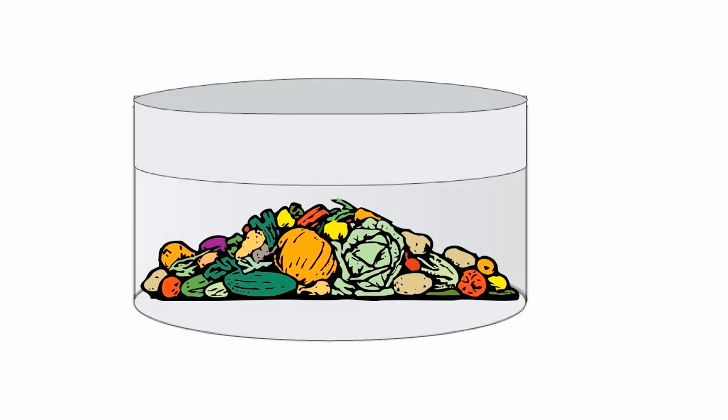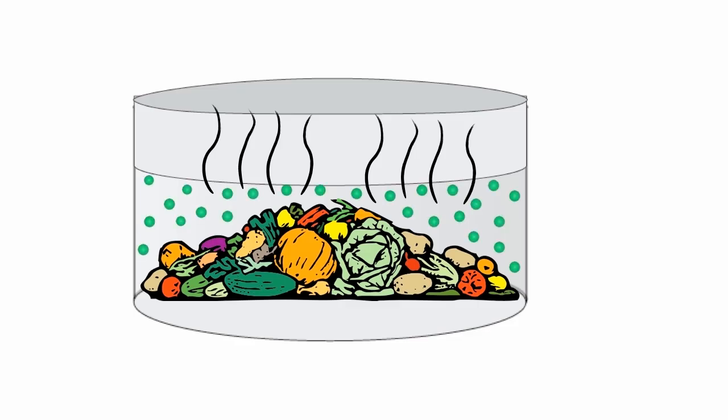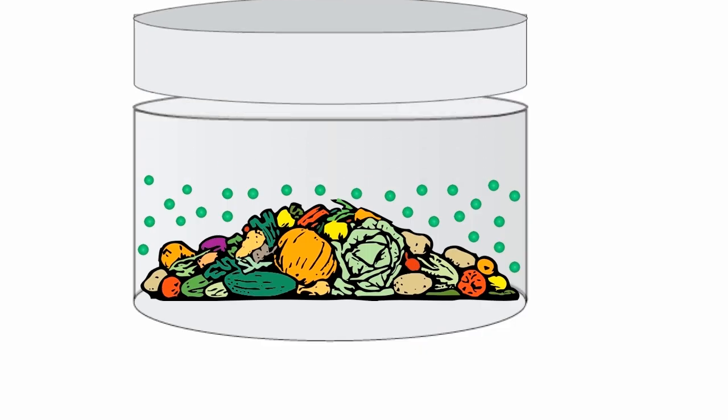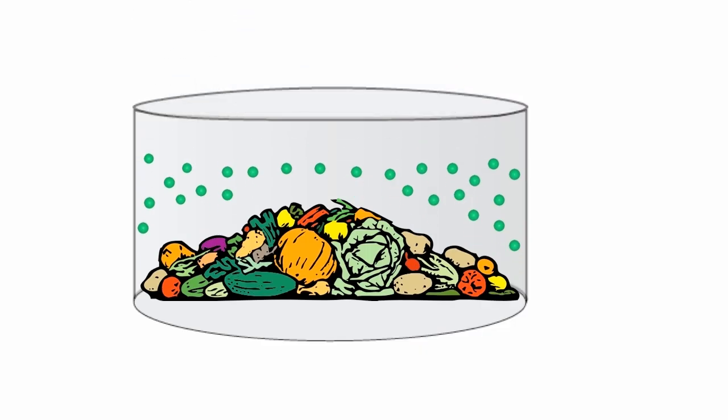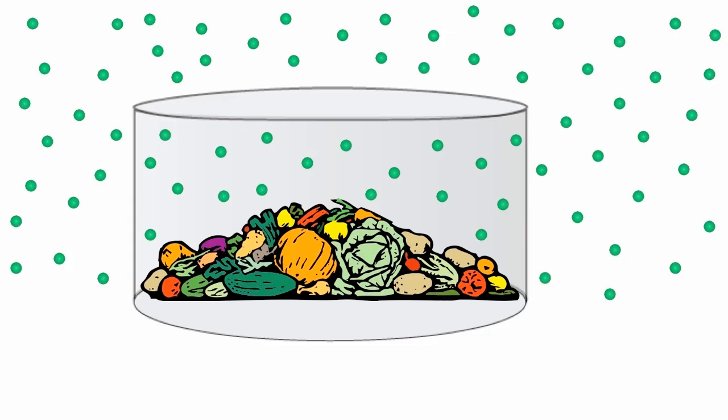So the smelly gases given off by rotting vegetables in a sealed box will fill the box with rotting vegetable smell but you won't be able to smell them outside the box. However, take the lid off the box and those particles will no longer bounce off the lid and be contained. They will start to escape into the air around the box.